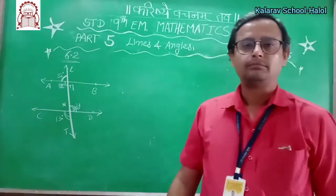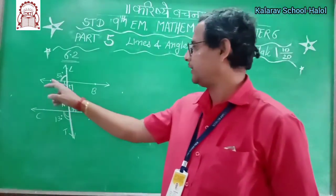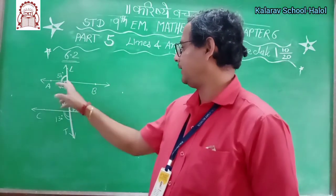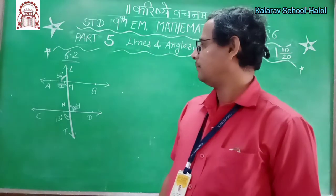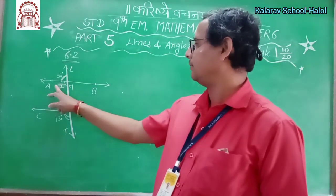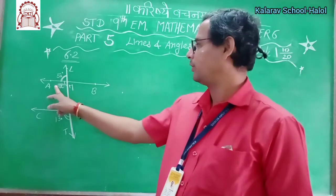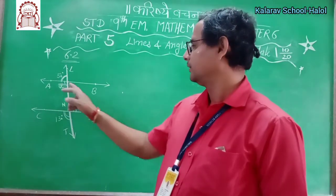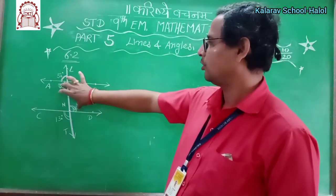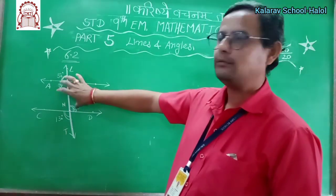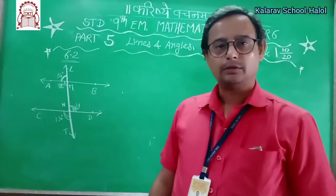There are two ways to find it. If you show that A and L and A and N are a linear pair, then by that property this angle becomes 180 minus 50, which means 130. If this is 130, then automatically this one is also 130, because these are alternate angles since the lines are parallel and this is the transversal. That is one way.